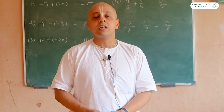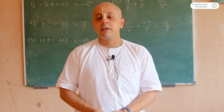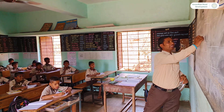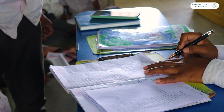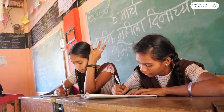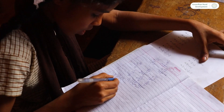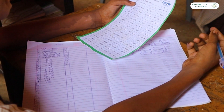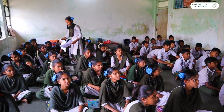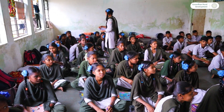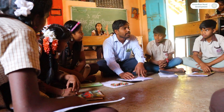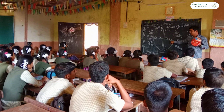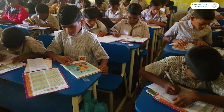Why does this happen? The main reason is that when teachers teach in class, only a few children understand it fully. Many partly understand it and others don't understand at all. Students do not get connected to the teacher, and this continues through 8th standard, leaving them poor in mathematics.